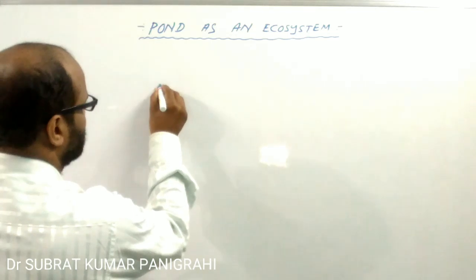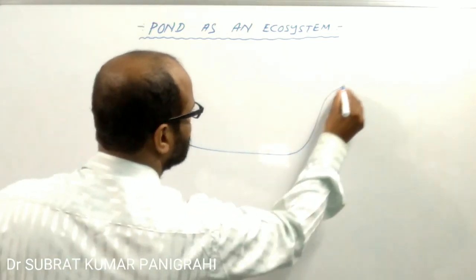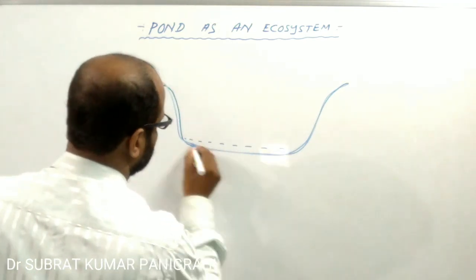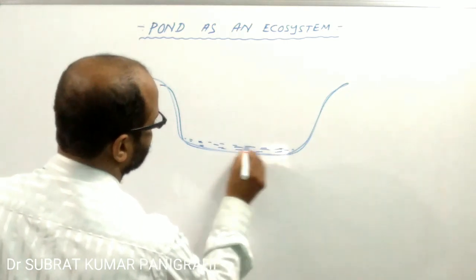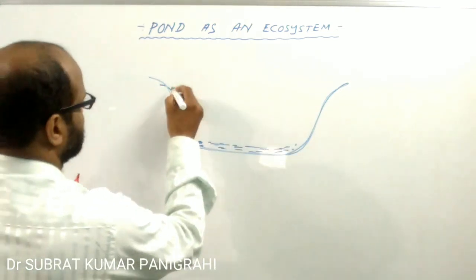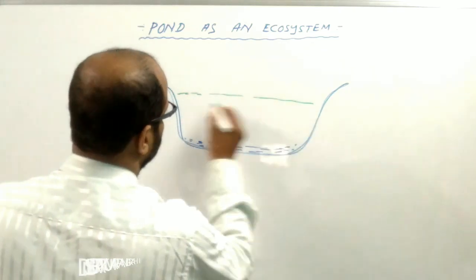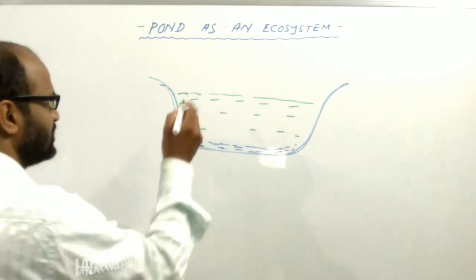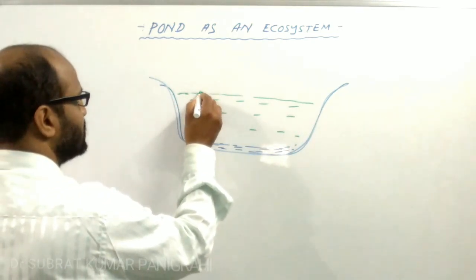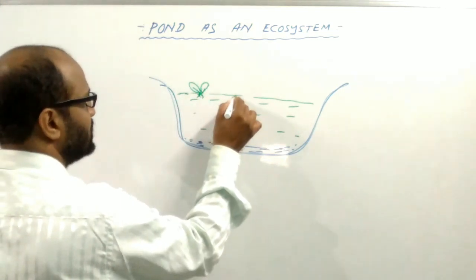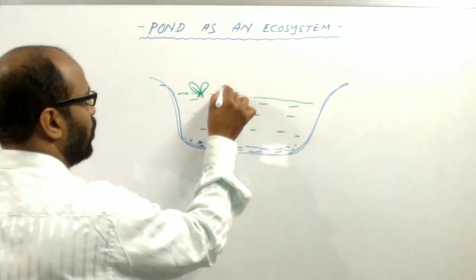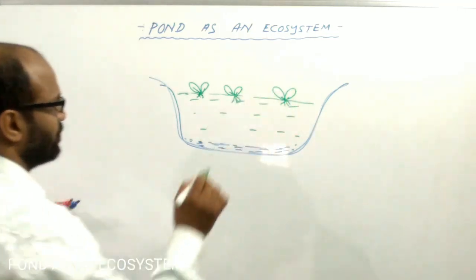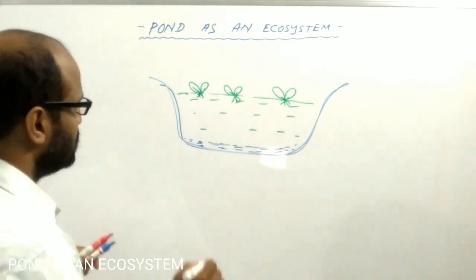Suppose that this is the diagrammatic view of the pond. At the bottom of the pond, there is heavy humus, and the pond is filled with water. This is the non-living part. The pond has floating plants on the surface — these are the floating plants present on the surface of the water.